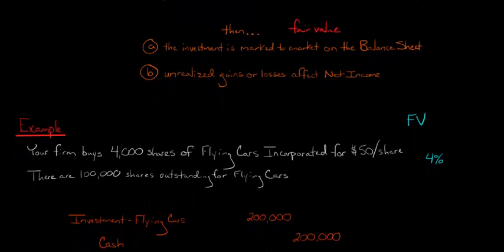Let me show you the journal entries for how it would work. When you buy your investment, or when you buy Flying Cars, when you purchase this investment, you're going to debit the investment account for $200,000, because that's what you paid. We just take the 4,000 and multiply it by 50. That gives you $200,000. Now, let's just assume you paid cash, so we credit cash for $200,000.